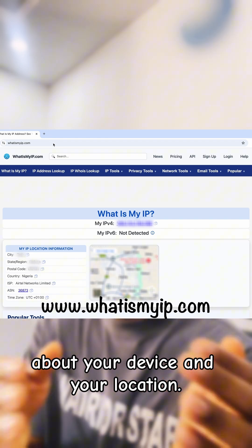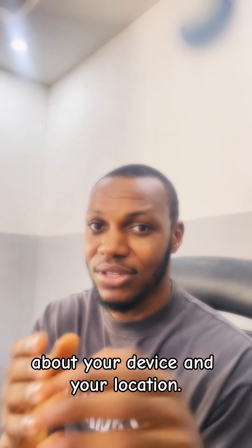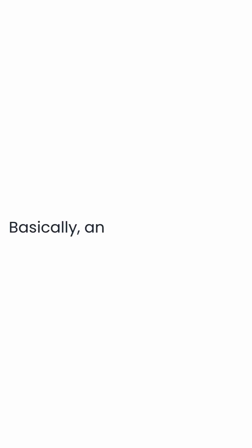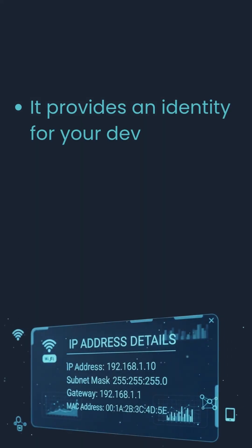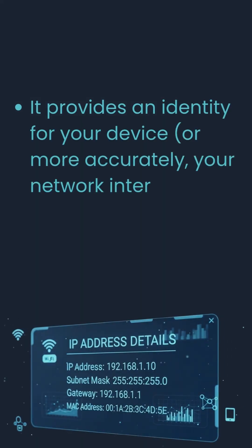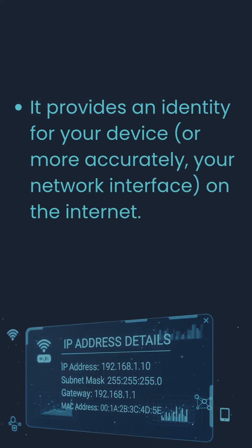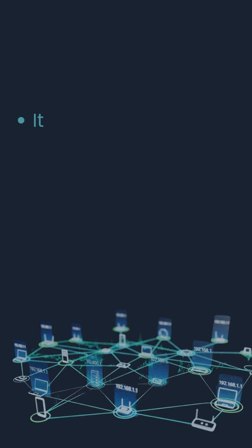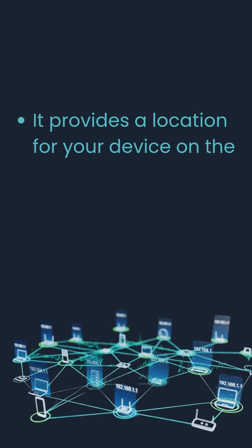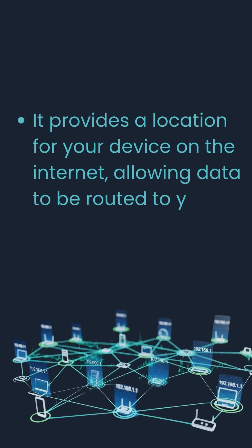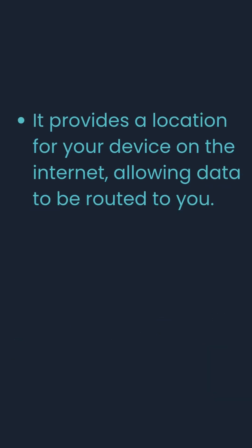Basically, an IP address serves two major purposes. First, it provides an identity for your device — or more accurately, your network interface — on the internet. Second, it provides a location for your device, allowing data to be routed to you.